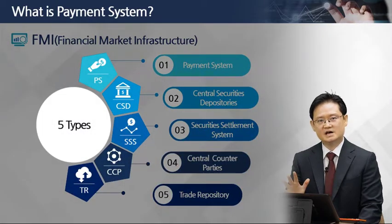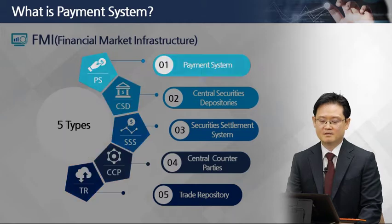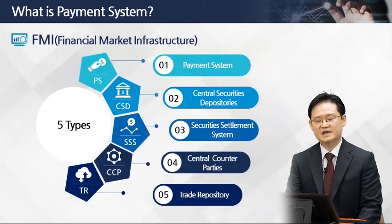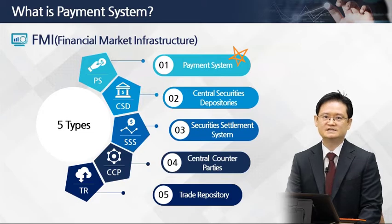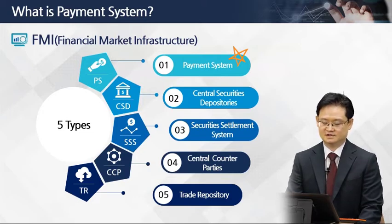There are five types of FMIs. Among them, Payment System is the first FMI. The reason Payment System is at the top is that it is the most essential and basic infrastructure for financial transactions.